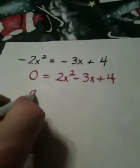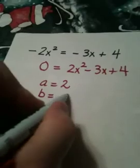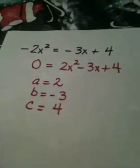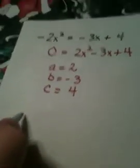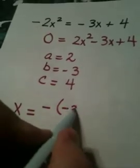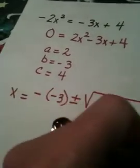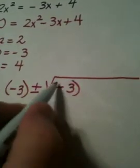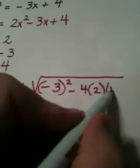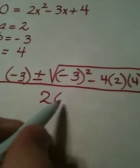So in this case, a is a positive 2, b is a negative 3, and c is a positive 4. We go to our formula, x is equal to the opposite of b plus or minus the square root of b squared minus 4ac all over 2a.